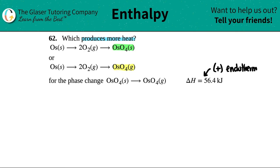Since this is a positive value, positives are always endothermic, and endothermic always means absorb the heat. So if I need to absorb, the system needs to take in 56.4 kilojoules in order to go from a solid to a gas.